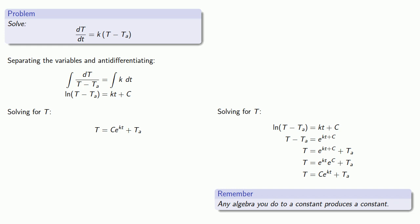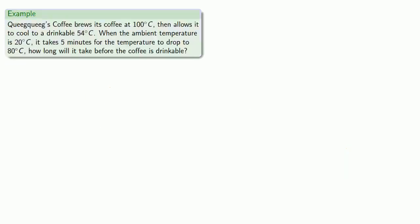And so now, all we need to know how to use this is to find these constants C and k. For example, Quigley's coffee brews its coffee at 100 degrees Celsius and allows it to cool to a drinkable 54 degrees Celsius. When the ambient temperature is 20 degrees Celsius, it takes five minutes for the temperature to drop to 80 degrees Celsius. How long will it take before the coffee is drinkable?